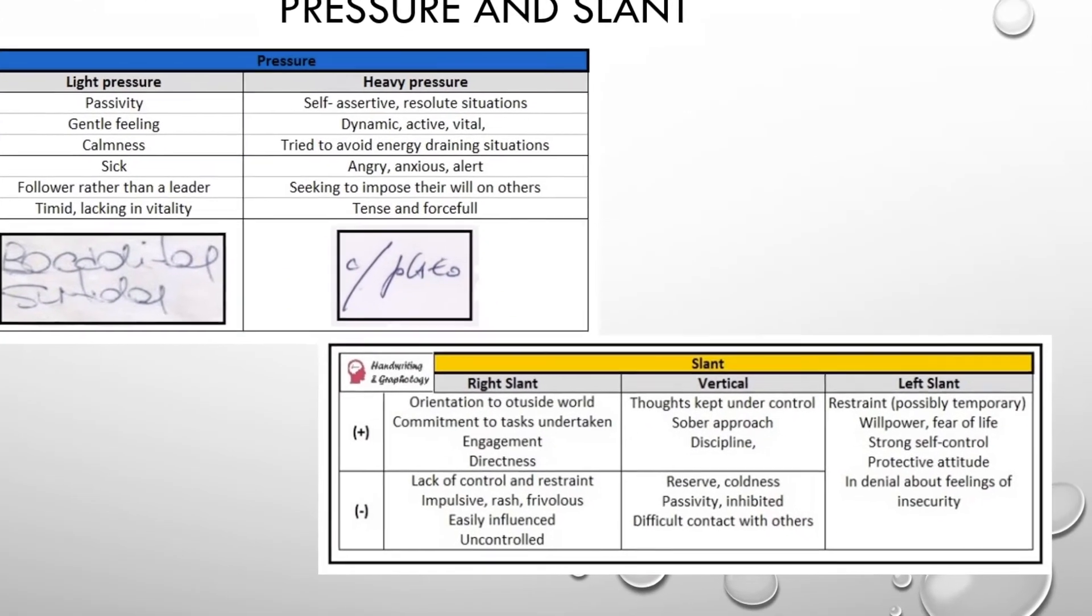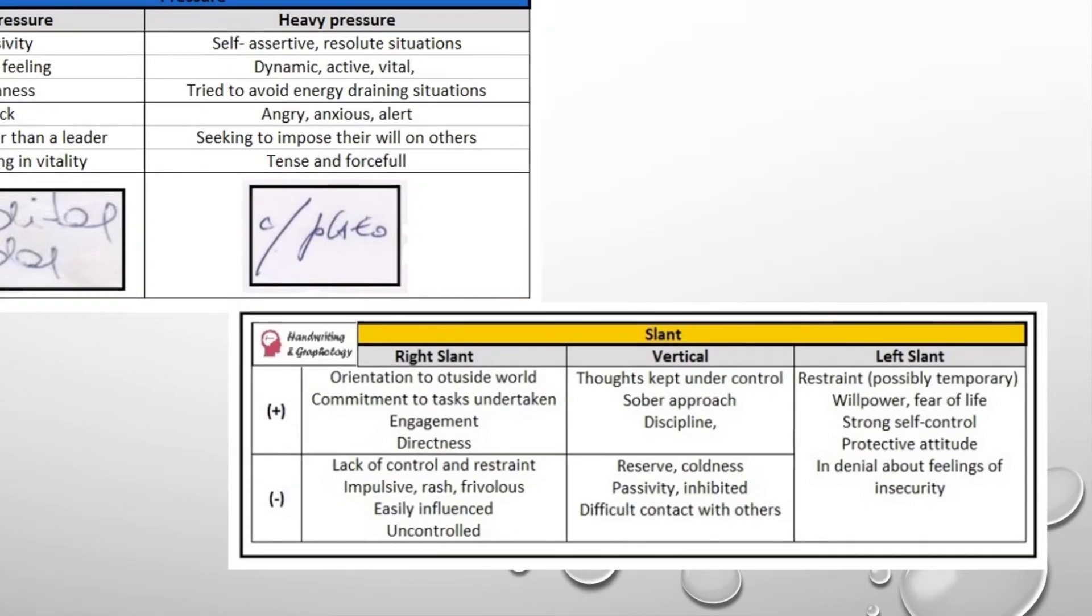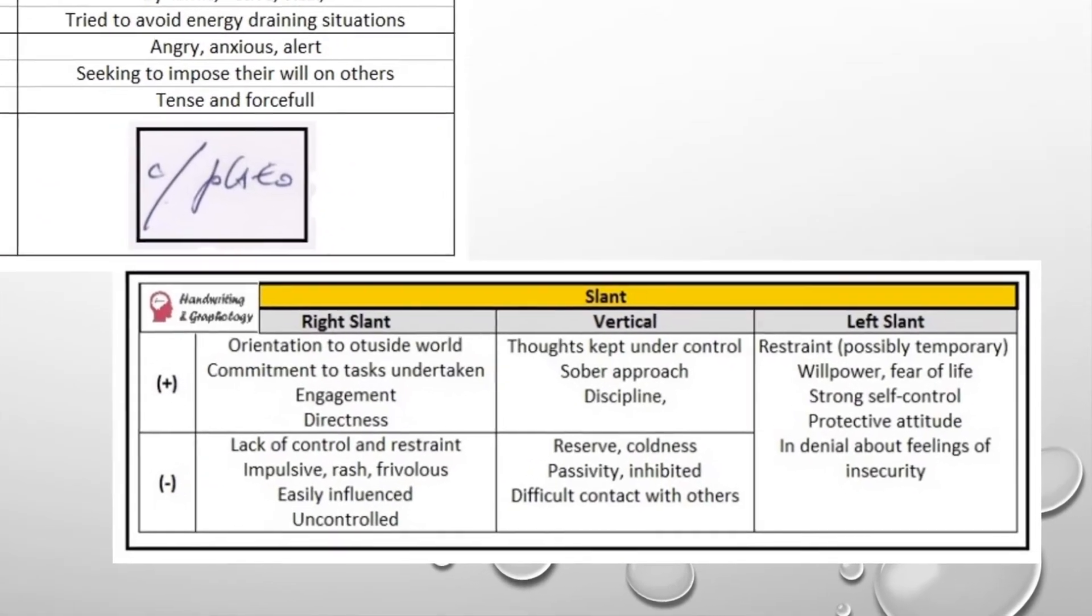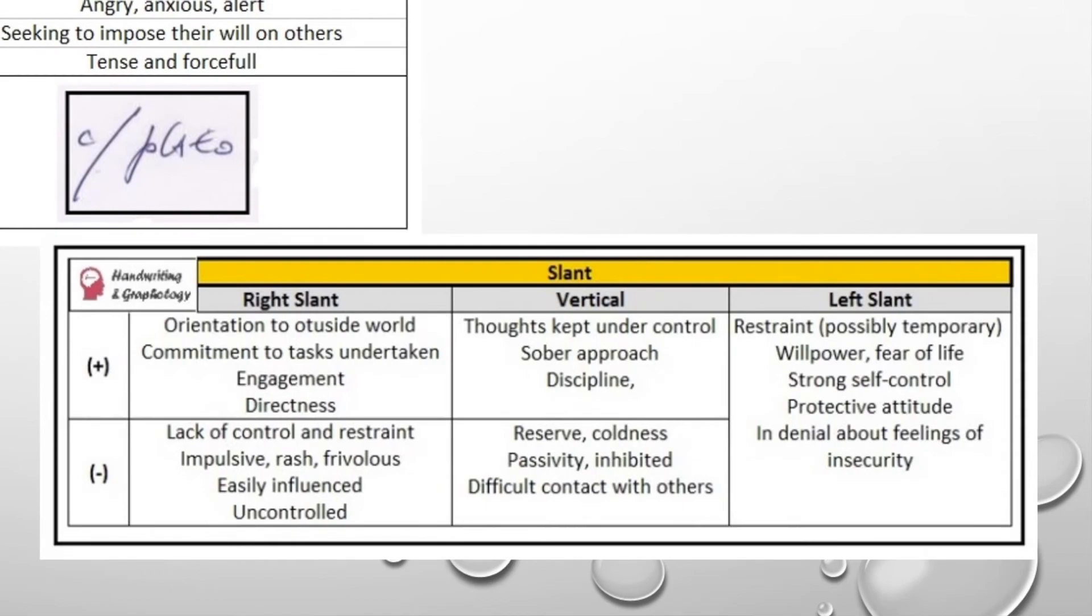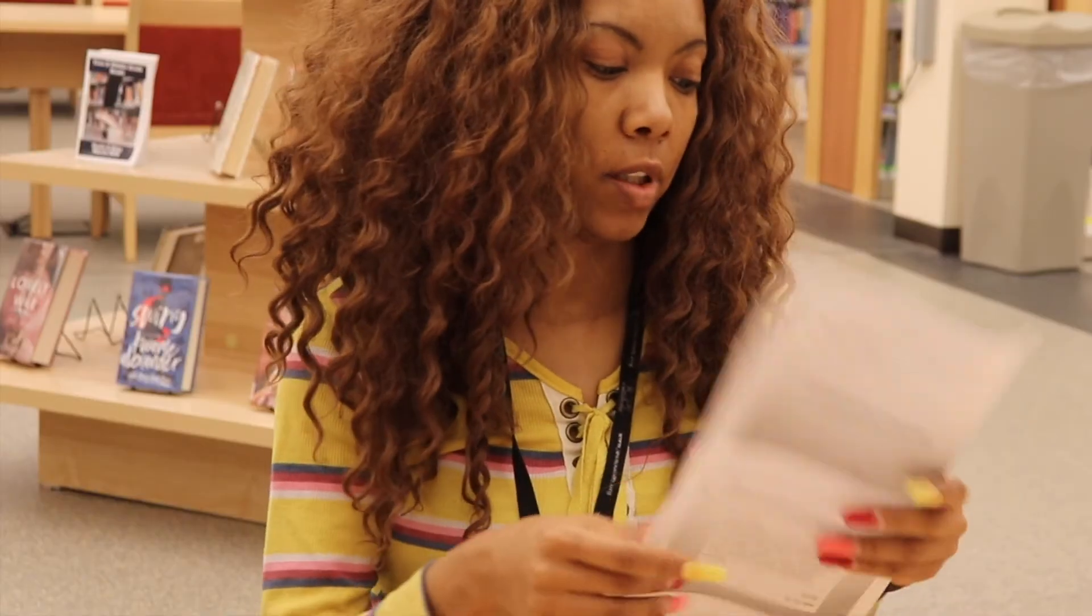Slant. If you write with a right slant, here's your pros and cons. Vertical, here's your pros and cons. Left slant, here's your pros and cons.